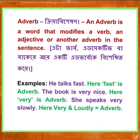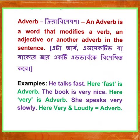Next, adverb — in Bengali 'kriya bisheshan.' An adverb is a word that modifies a verb, an adjective, or another adverb in the sentence. Examples: He talks fast — here 'fast' is an adverb. The book is very nice — here 'very' is an adverb qualifying the adjective 'nice.' She speaks very slowly — here 'very' and 'slowly' are adverbs.